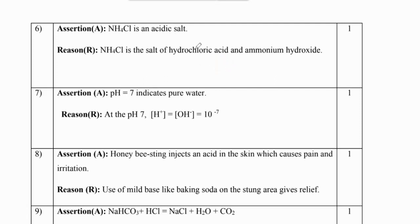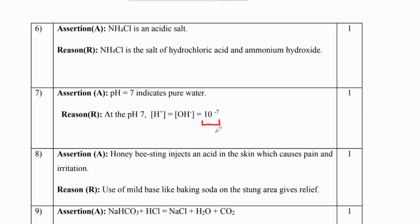Question 7: pH equal to 7 indicates pure water. The reason states that at pH 7, the concentration of H⁺ and OH⁻ is each equal to 10 raised to the power minus 7. Both are true and it is a correct explanation, so A is the answer.